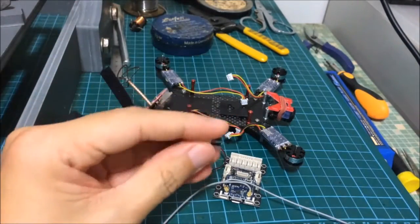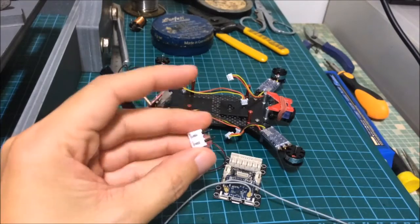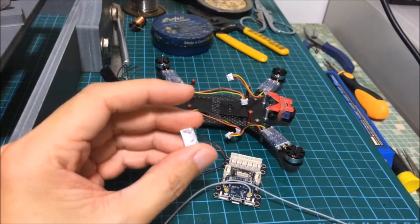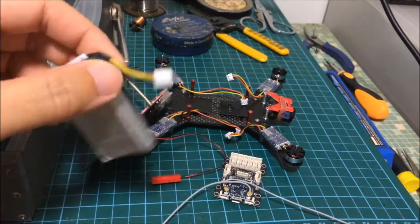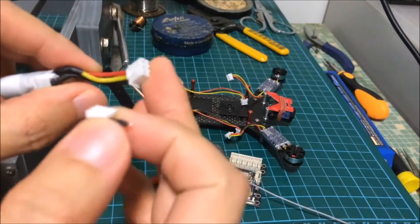Also I have found this two cell LiPo pack connector. This will be going onto the power cables for the drone. And it will allow me to hook up my self-assembled 2 cell LiPo pack here, which only has the charge tab.